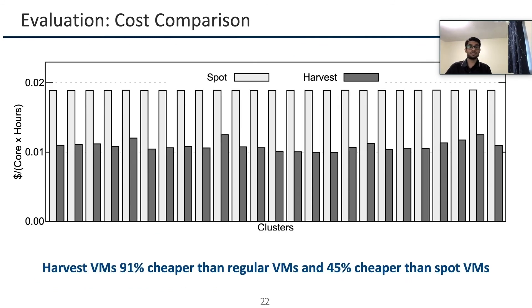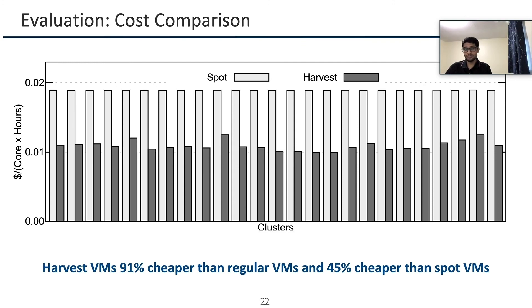Recall that the Harvest VM pricing model costs the same as spot VMs for their minimum size, and any additional harvested resources cost 50% less than the resources at minimum size. Using this pricing model, we plot the cost comparison between Harvest VMs and spot VMs. Spot VMs cost more than Harvest VMs, and combining this with spot VMs being significantly cheaper than regular VMs implies that Harvest VMs are not only significantly cheaper than regular VMs, but also 45% cheaper than spot VMs.